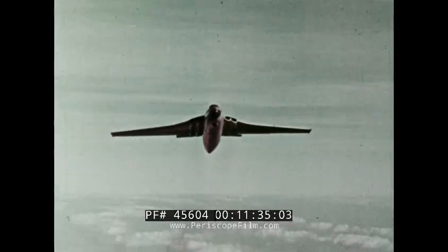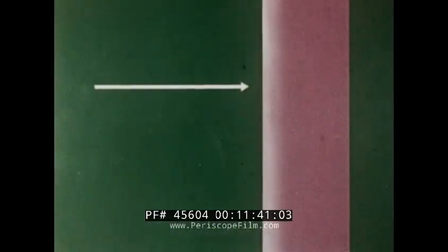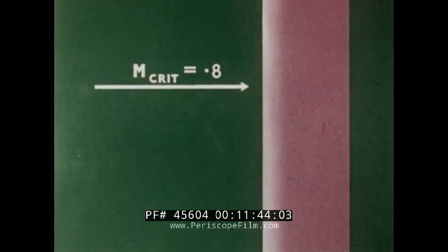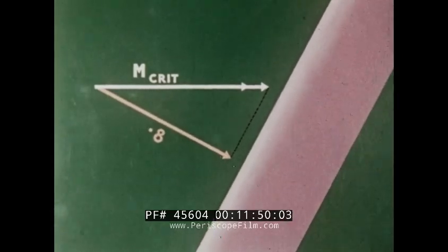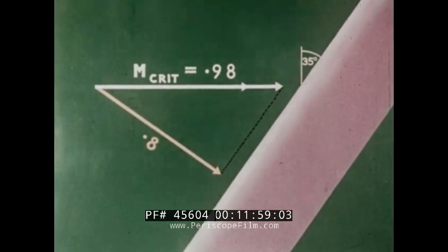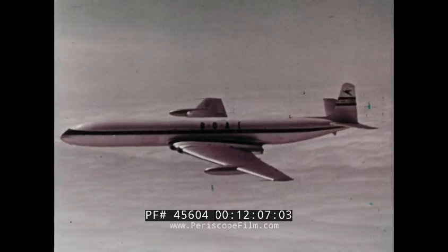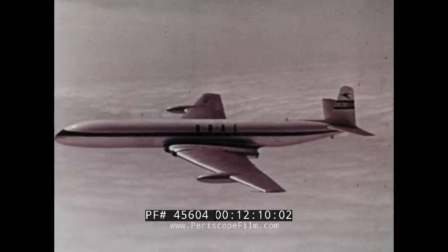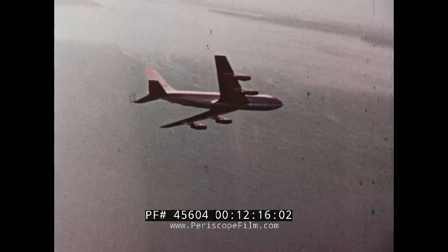The second method is to sweep the wing back. Suppose this unswept wing has a critical Mach number of 0.8. If we sweep the wing back, only that part of the airflow at right angles to the wing is speeded up as it passes over the wing, so the critical Mach number is raised — in this case to 0.98. High speed jet airliners use thin wings and sweepback to obtain high critical Mach numbers. By cruising at high speeds but still below the critical Mach number, they avoid shock waves altogether and the troubles that come with them.